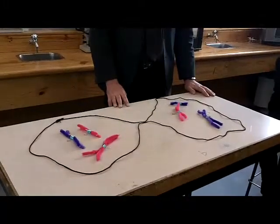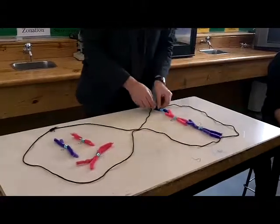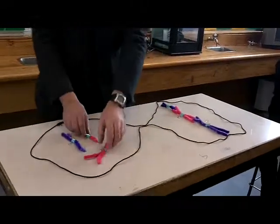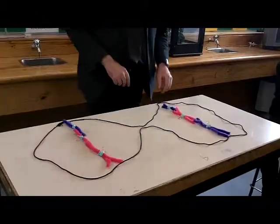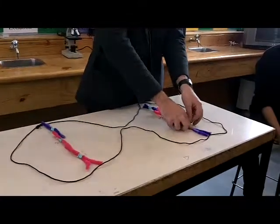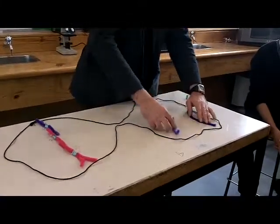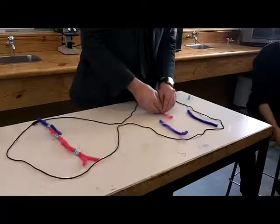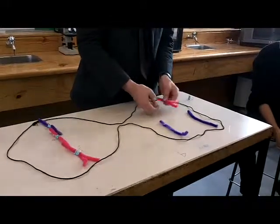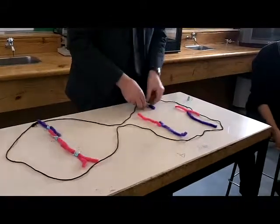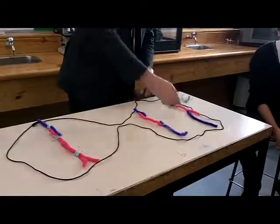The next thing they do is they line up again at the centre. And this time the chromosome pairs are going to be separated, so one copy of each chromosome now ends up in its own little cell.